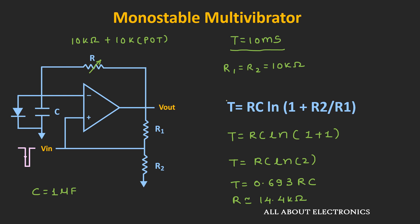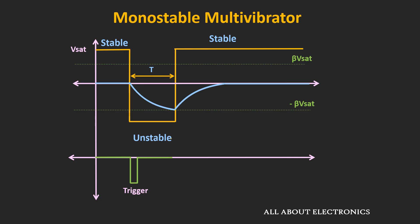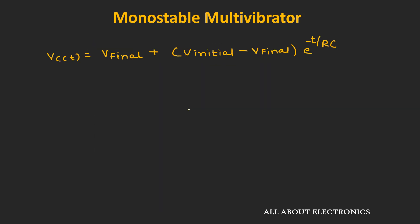Now let's derive the expression for time period t of this monostable multivibrator. For the derivation, we assume the diode is ideal, so the drop across it is almost zero. When the negative trigger signal is applied, the capacitor starts charging from 0 V towards the negative saturation voltage. So the initial voltage is 0 V and the final voltage is −Vsat. Let's substitute these values into the capacitor voltage expression.